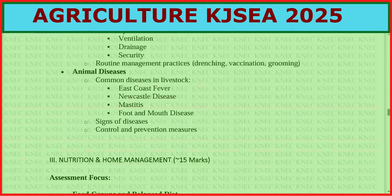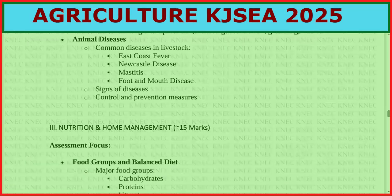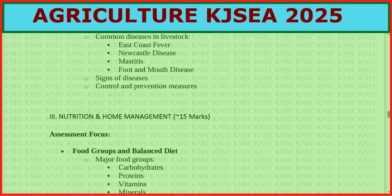On animal diseases, look at common diseases in livestock — you may be asked a direct or structured question. Key diseases include East Coast Fever, Newcastle disease, mastitis, and foot and mouth disease. Cover signs and symptoms of the diseases and their control and prevention measures.